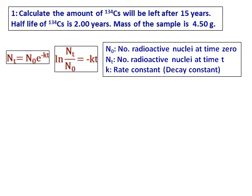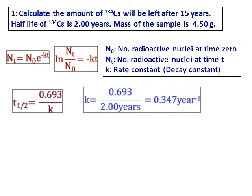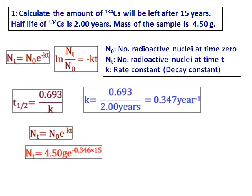In order to calculate Nt, we need the value of k, and k can be obtained from the half-life using the formula t-half equals 0.693 divided by k. Get the value of k, substitute it into the equation, and get the value of Nt, which comes as 0.045 gram.